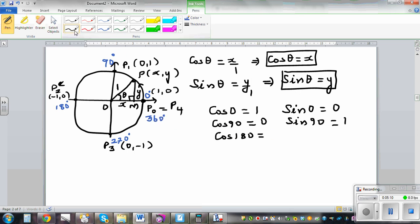So I can say, cos 180 is, you are here, so the x coordinate is negative 1. And sin 180 is 0.